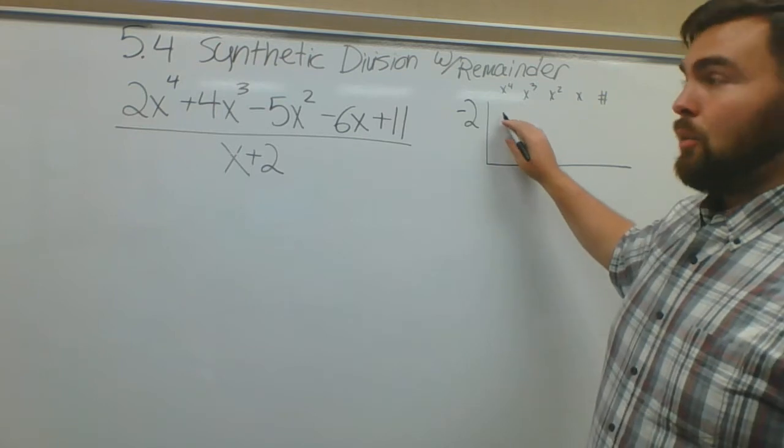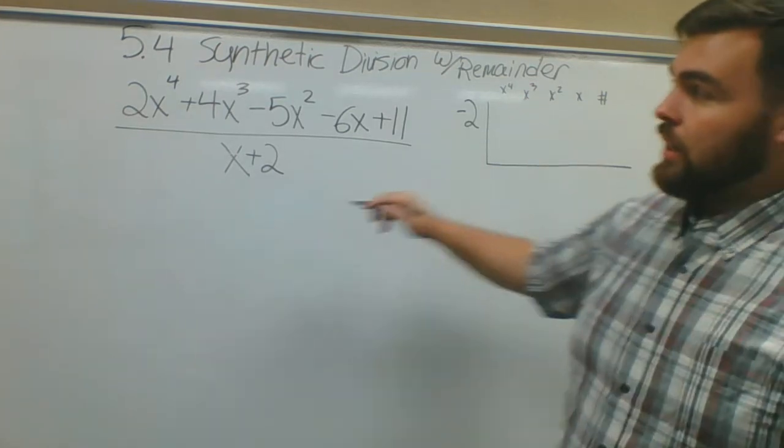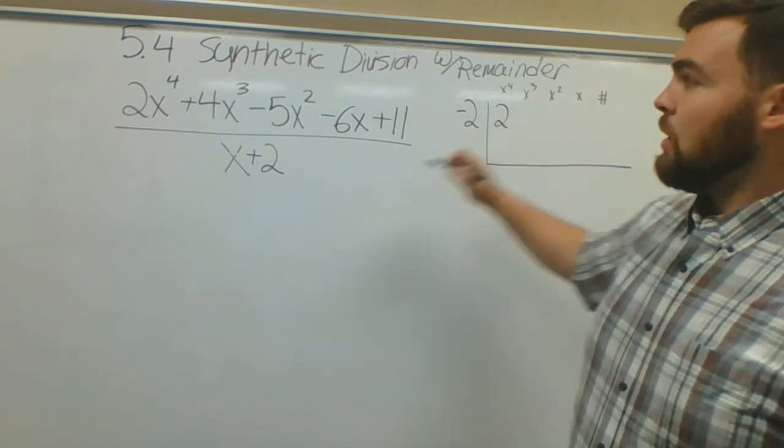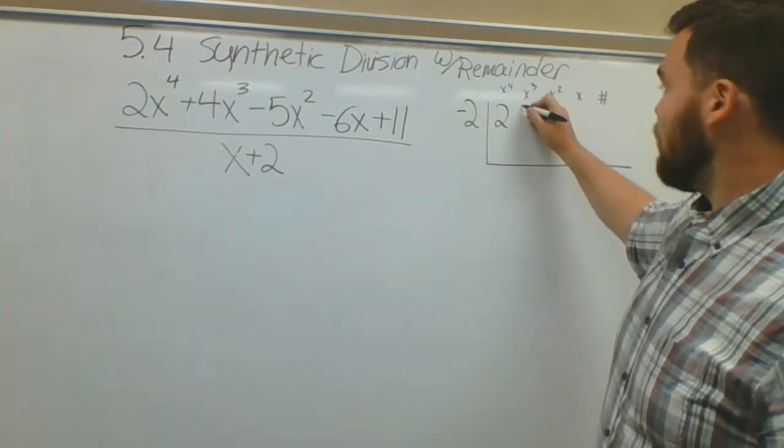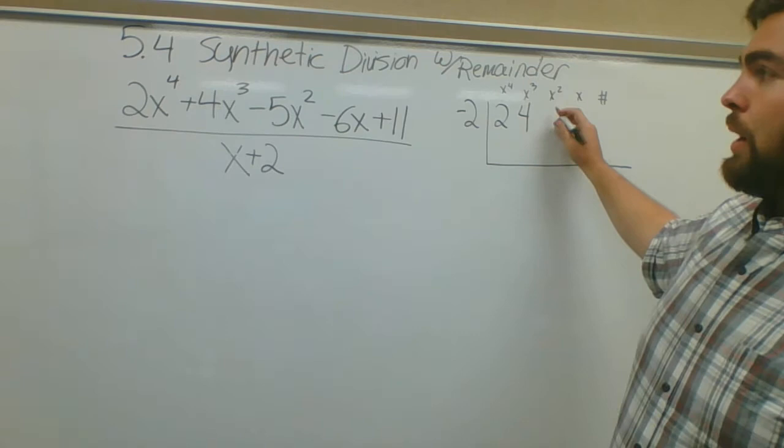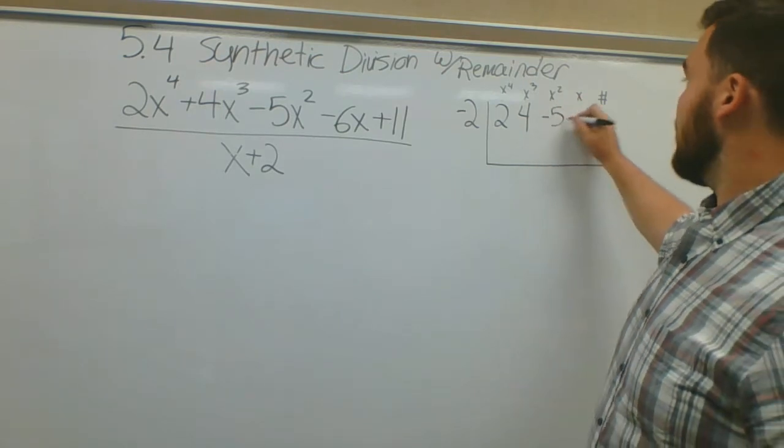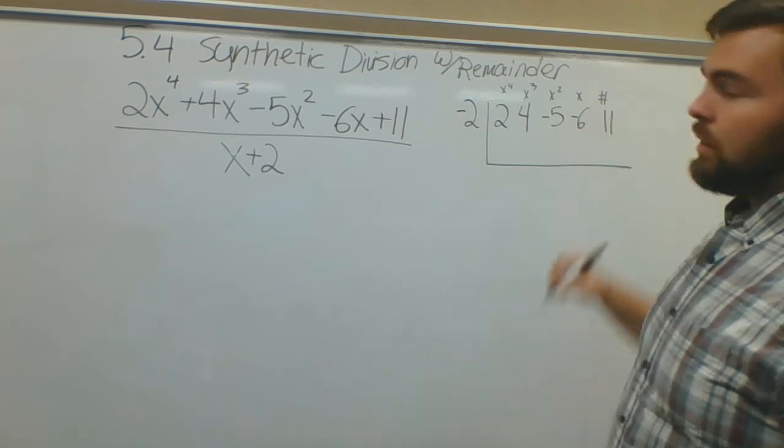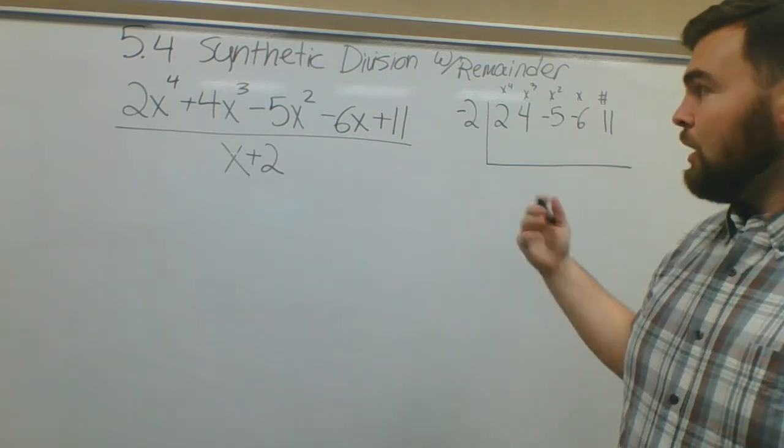So x to the fourth, I see my coefficient here is 2. X to the third, coefficient is 4. For x squared, my coefficient is negative 5. X is negative 6. My constant is 11.